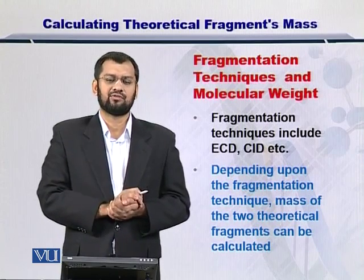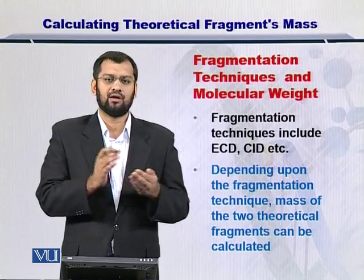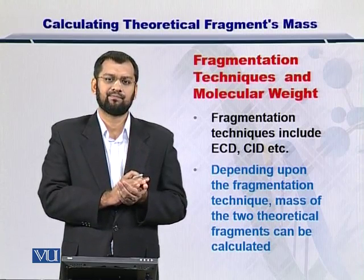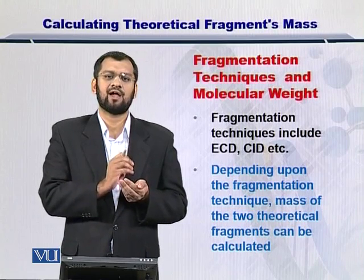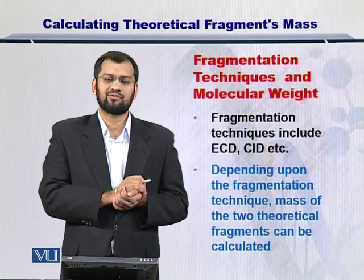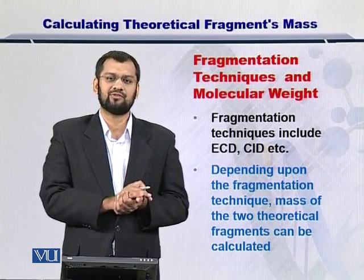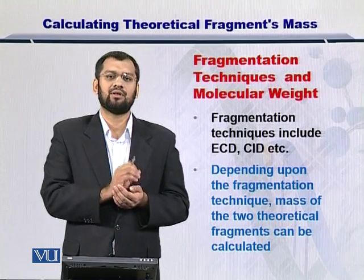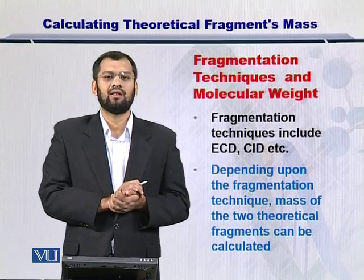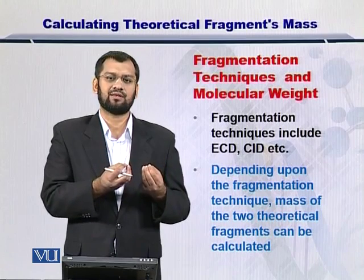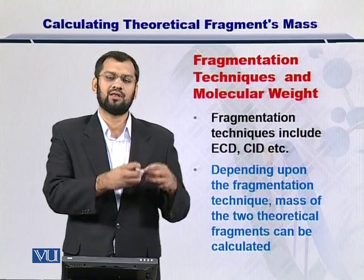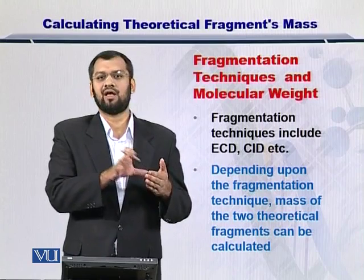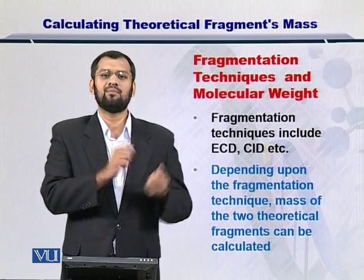There are different fragmentation techniques — ETD, CID, ECD, and so on. Each fragmentation technique gives you a specific type of fragment. These fragments can be made in different sizes, but the bond that is broken depends on the type of fragmentation method. If you have a fragmentation method that breaks a specific bond, then you can look at the sequence of the peptide before and after that bond and calculate the molecular weight.